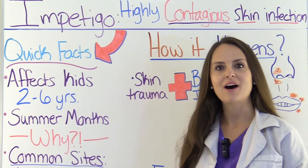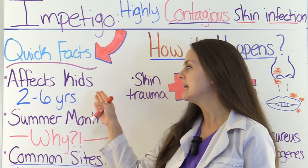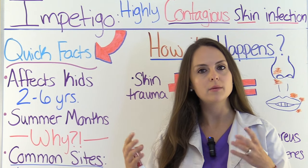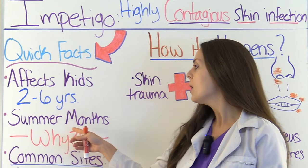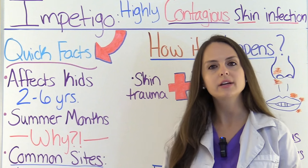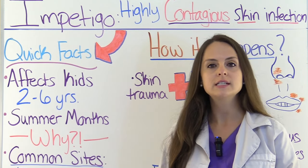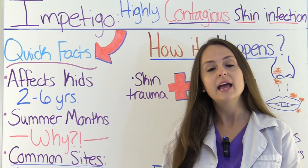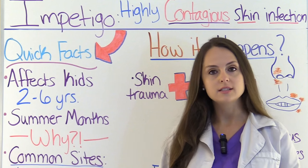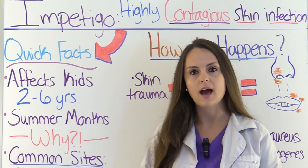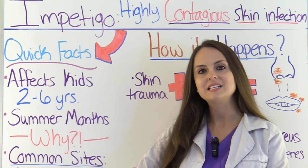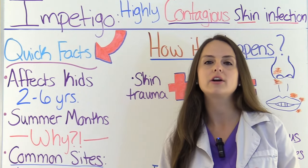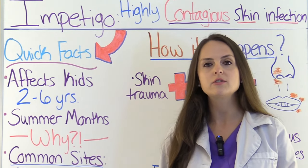Let's look at some quick facts about Impetigo. It tends to affect kids ages 2 to 6, however adults can acquire Impetigo but children tend to be more at risk. It tends to be more prevalent during the summer months. Children tend to be more active — they're out there playing, bumping, scraping their skin, which decreases skin integrity and allows the bacteria to cause this condition. They also tend to be in closer contact especially in school, so this condition can be easily spread. During the summer months the bacteria that causes Impetigo tends to live longer and actually flourishes, especially during those hot humid days.